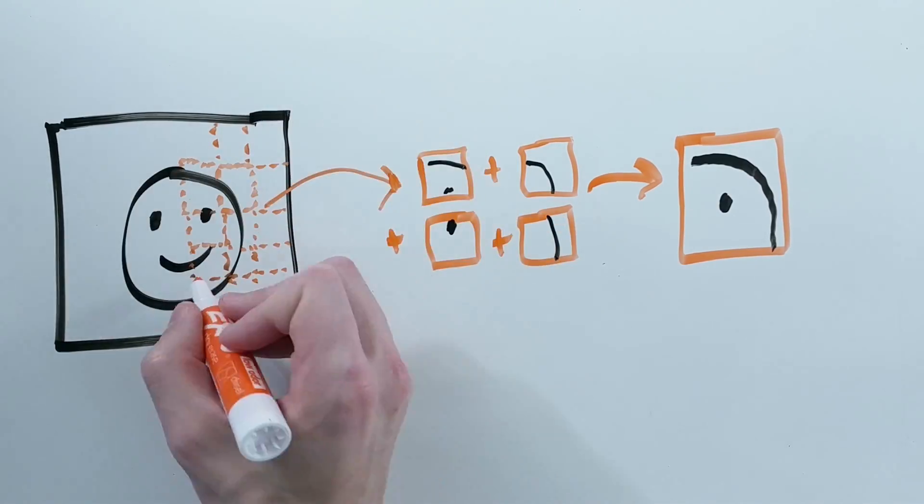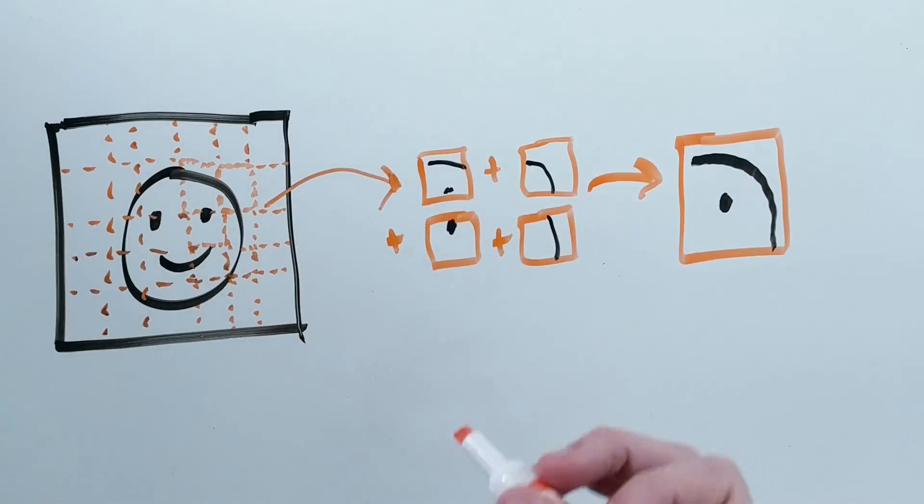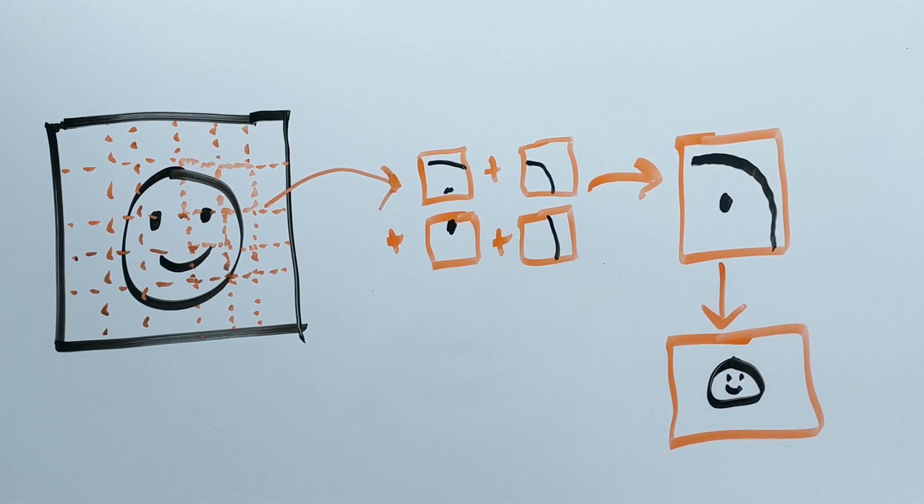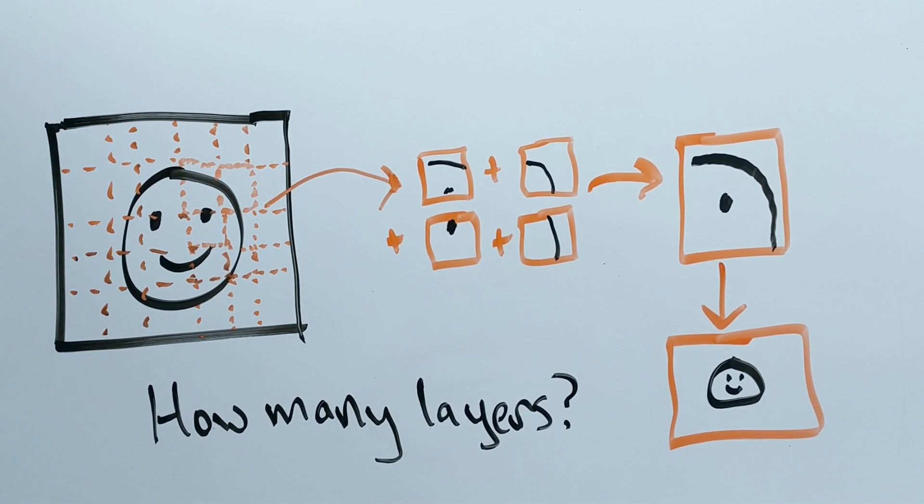Ideally, by the last convolutional layer, each part of that last layer is looking at all of the input. How many convolutional layers do you need, and how do you tell the portion of the input that the final layer sees?